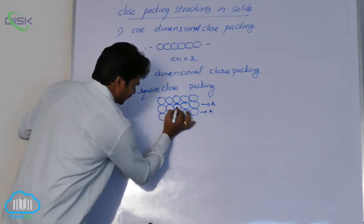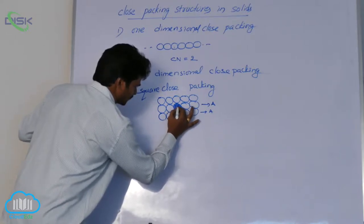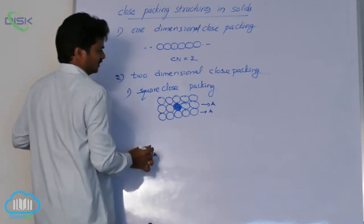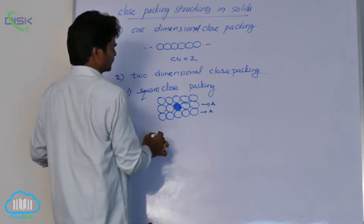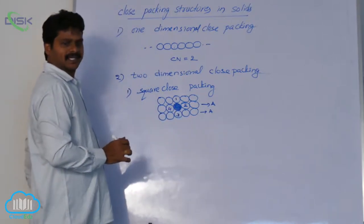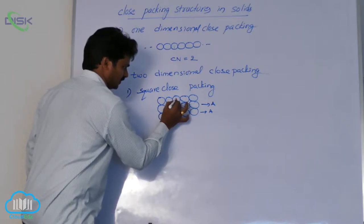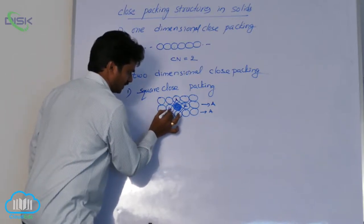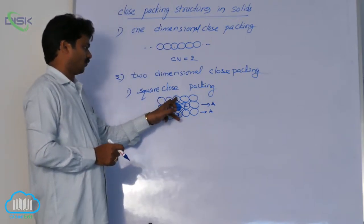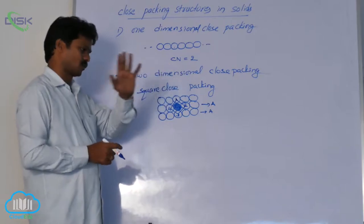If we consider any atom in this arrangement, this sphere is in contact with four spheres: first, second, third, and fourth. If we join the centers of these four nearest neighbors, we get a square. That's why it is named square close packing.